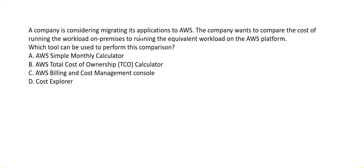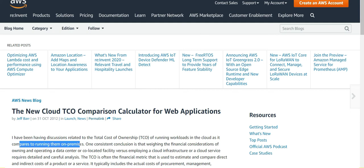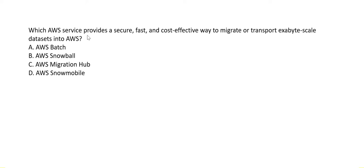A company is considering migrating its applications to AWS and wants to compare the cost of running workloads on-premises versus on AWS. The keyword is 'compare the cost.' The answer is TCO (Total Cost of Ownership). The TCO calculator gives you the total cost of running workloads in the cloud compared to running them on-premises.